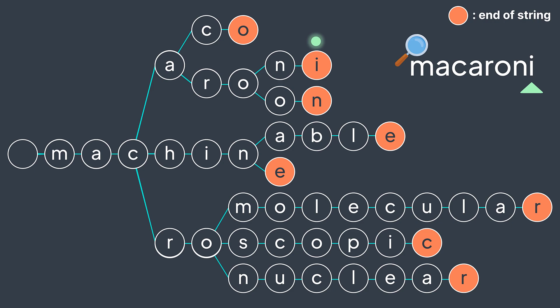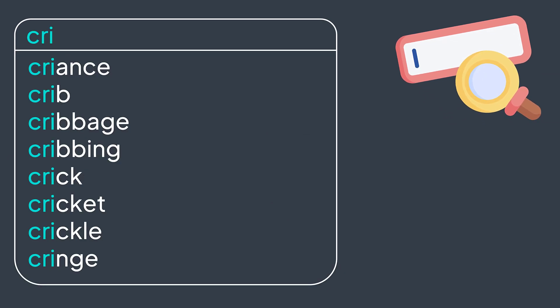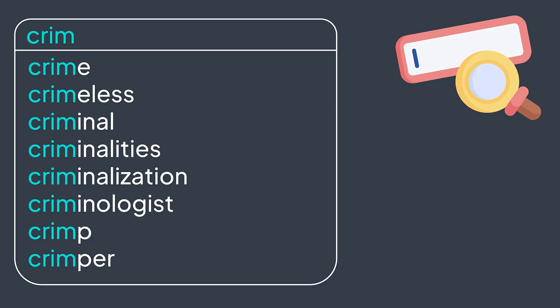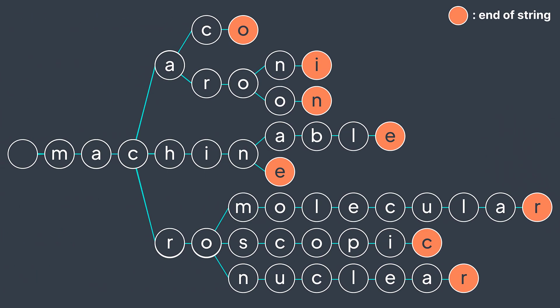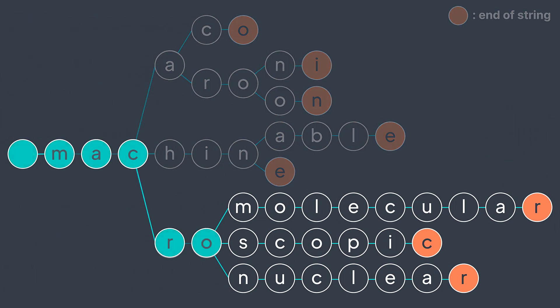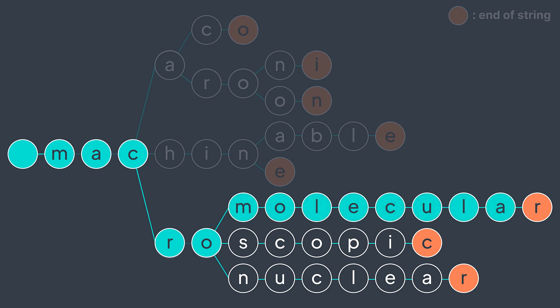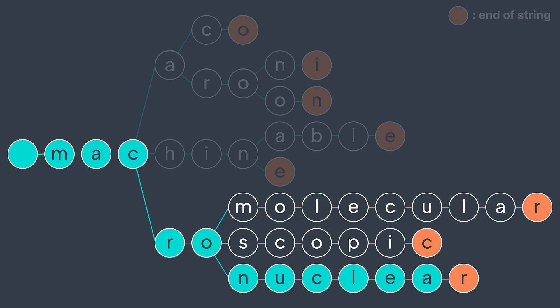Another advantage of the trie is that we can use it to implement the autocomplete feature, where you write something and it suggests words that start with what you wrote. It's good to implement with a trie because, for example, if we want all the words that start with 'macro', we just traverse those characters in the trie and find the subtree that contains all of them — Macromolecular, Macroscopic, and Macronuclear.